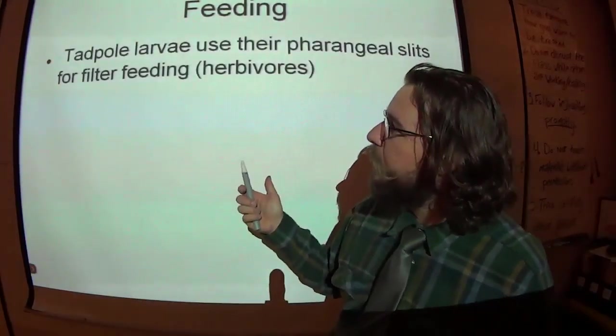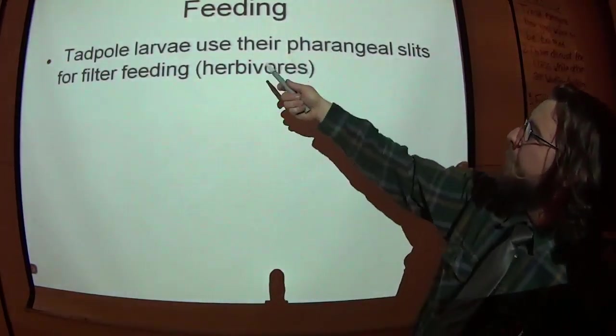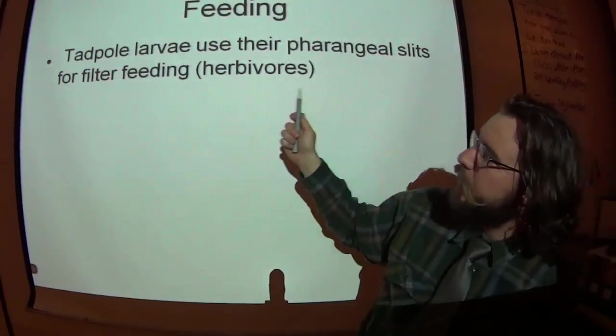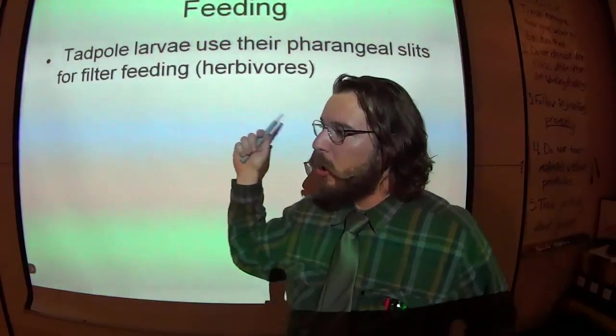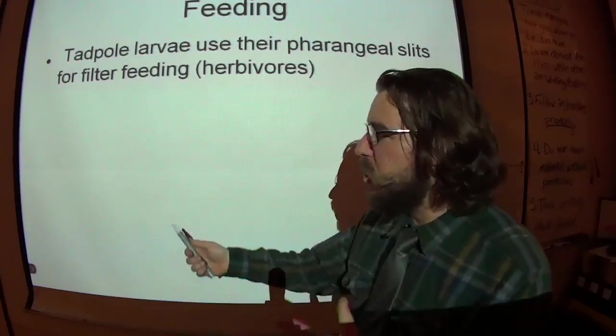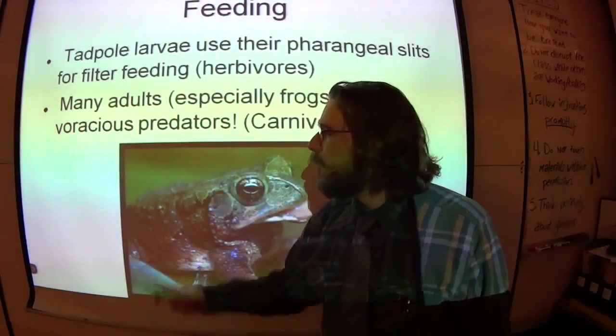The way that they survive is because they have modified all kinds of crazy, overly aggressive methods of feeding. So tadpoles, they've got the pharyngeal slits, they use filter feeding. They're herbivores. They eat little bits of plankton and plants and gook in lakes and whatever.